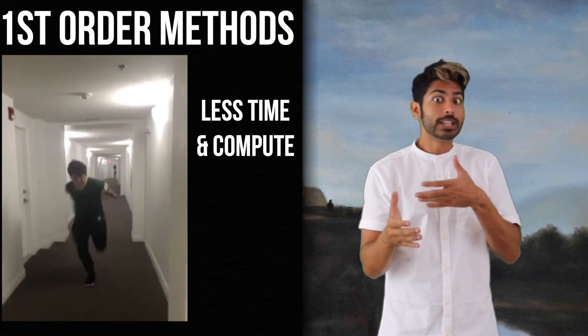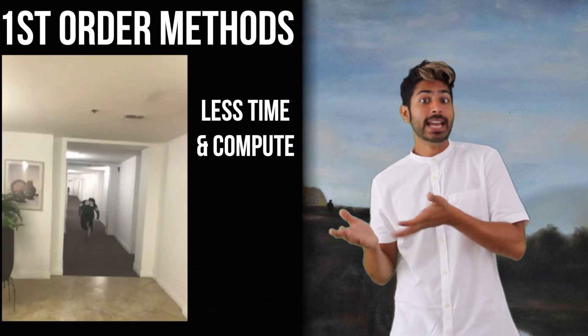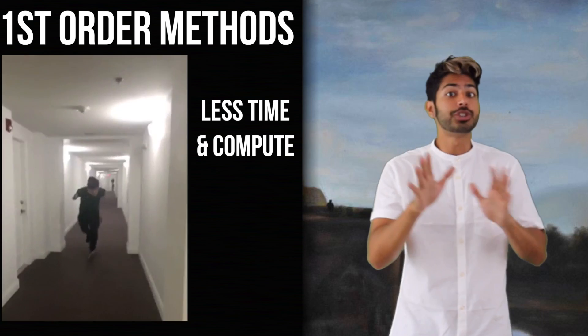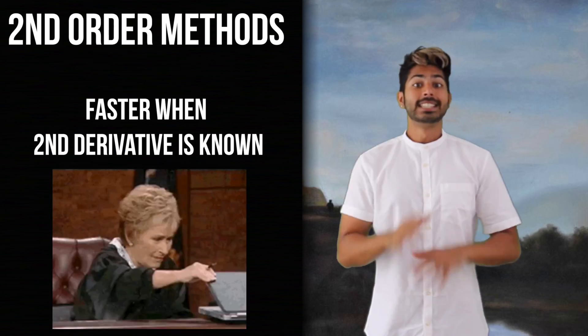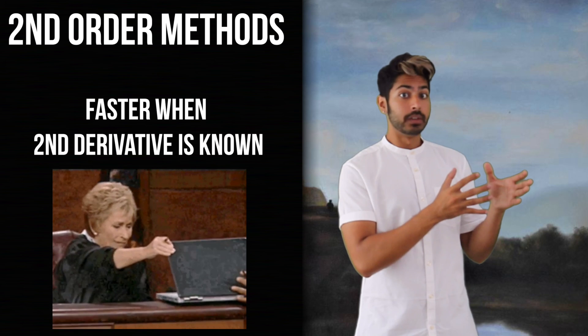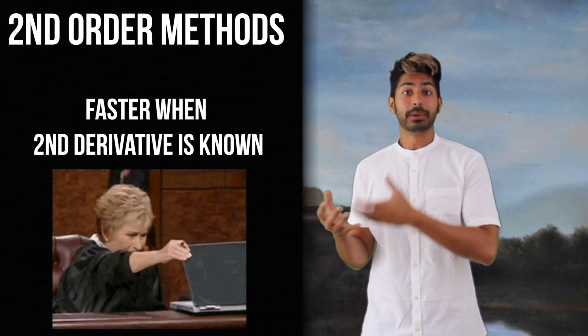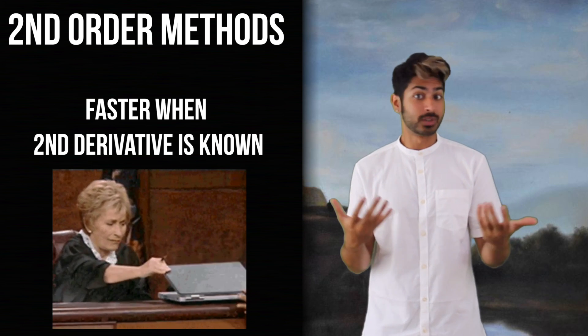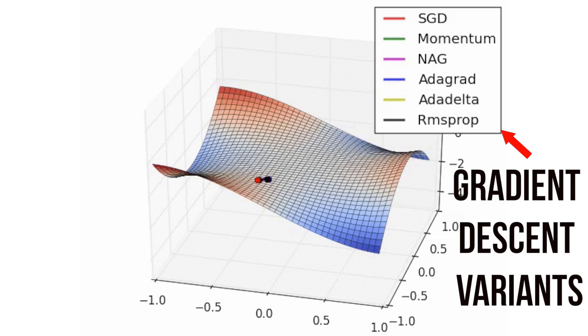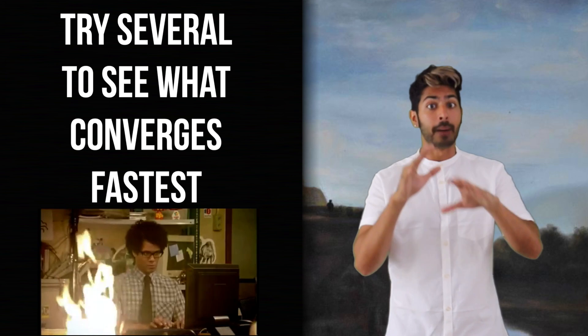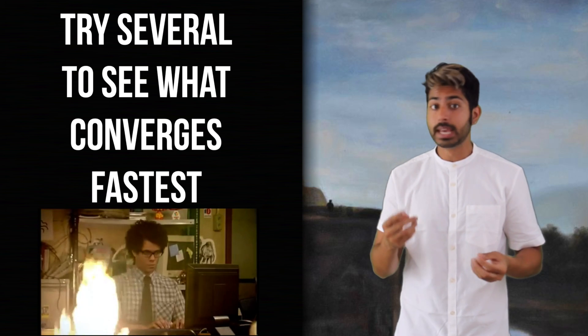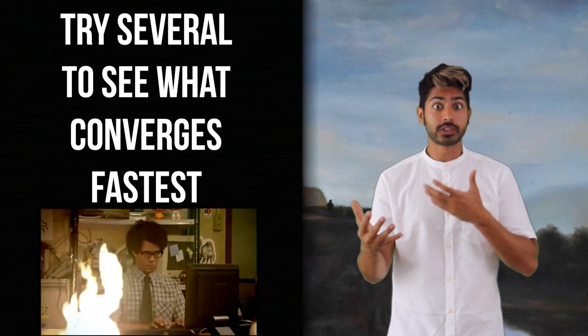So, when should you use a second-order method? First-order methods are usually less computationally expensive to compute and less time expensive, converging pretty fast on large datasets. Second-order methods are faster when the second derivative is known and easy to compute. But the second derivative is often intractable to compute, requiring lots of computation. For certain problems, gradient descent can get stuck along paths of slow convergence around saddle points, whereas second-order methods won't. Trying out different optimization techniques for your specific problem is the best way to see what works best.